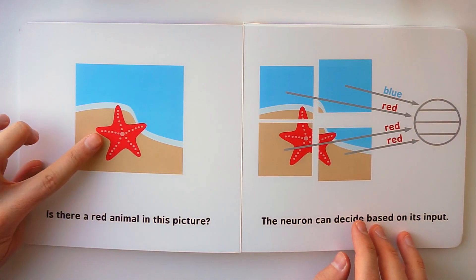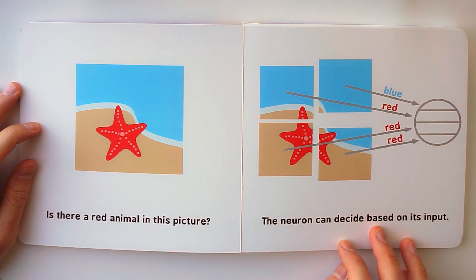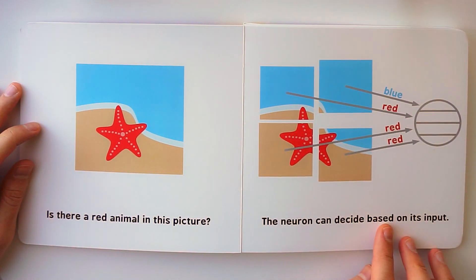Is there a red animal in this picture? The neuron can decide based on its input.